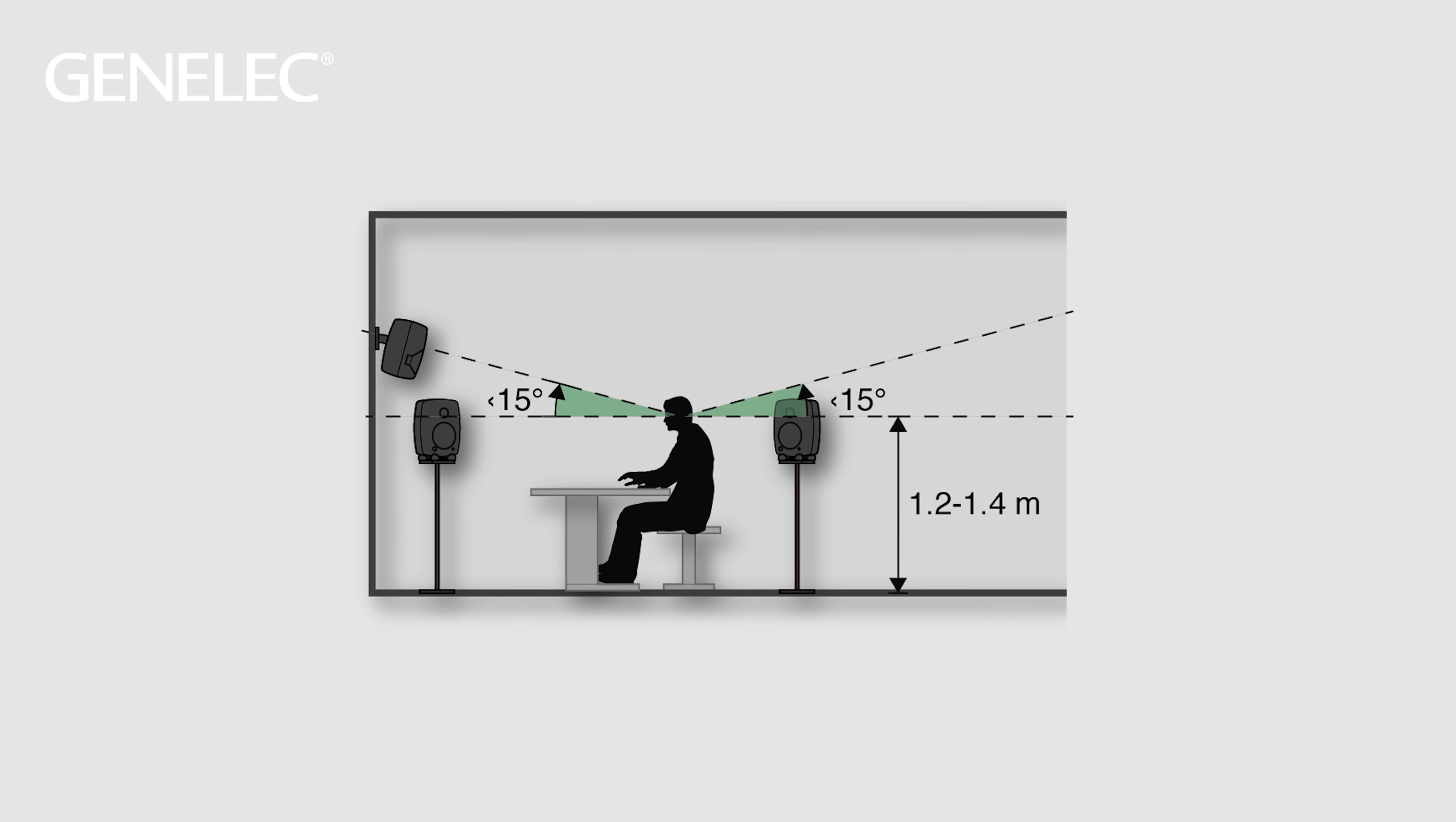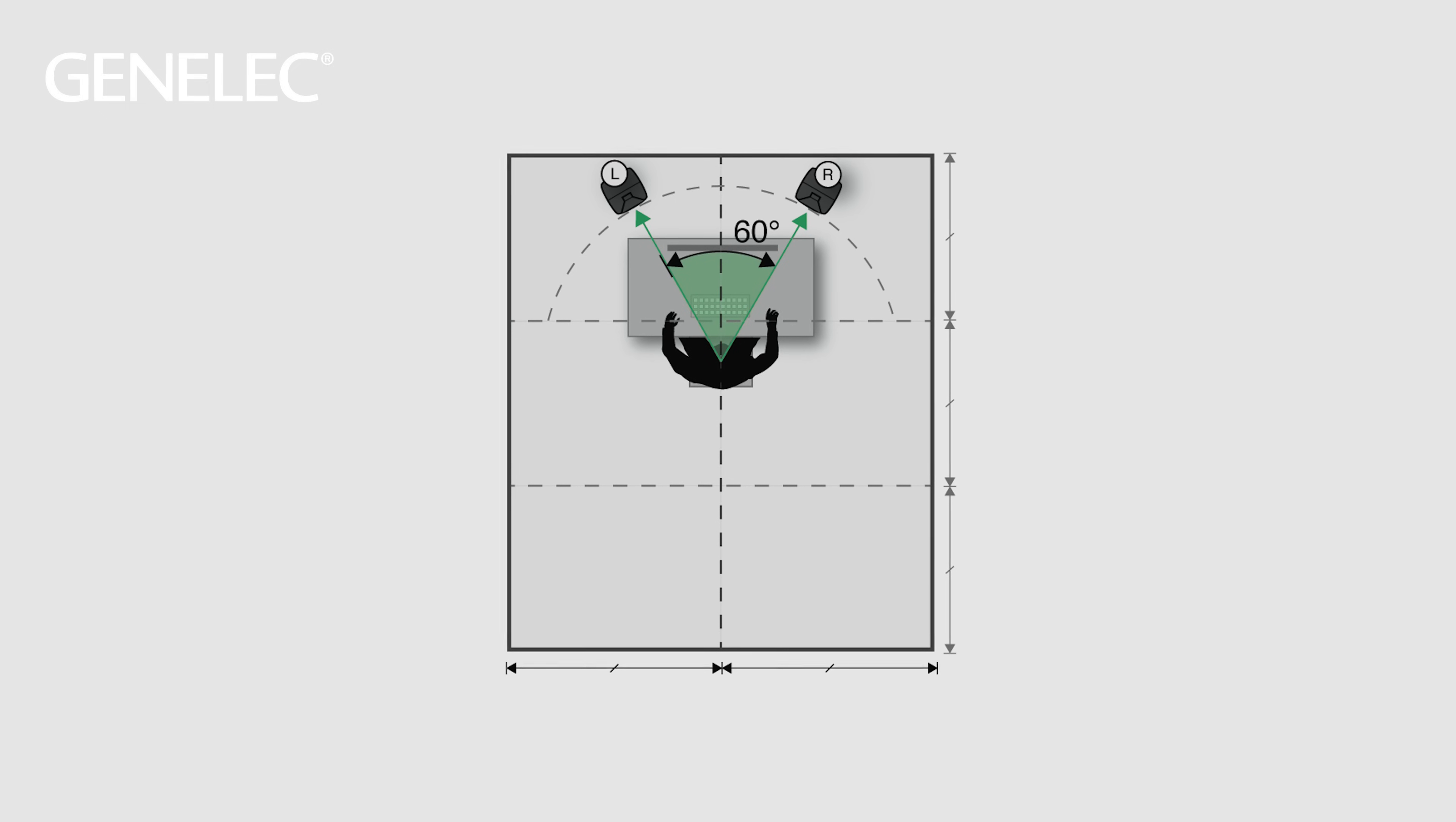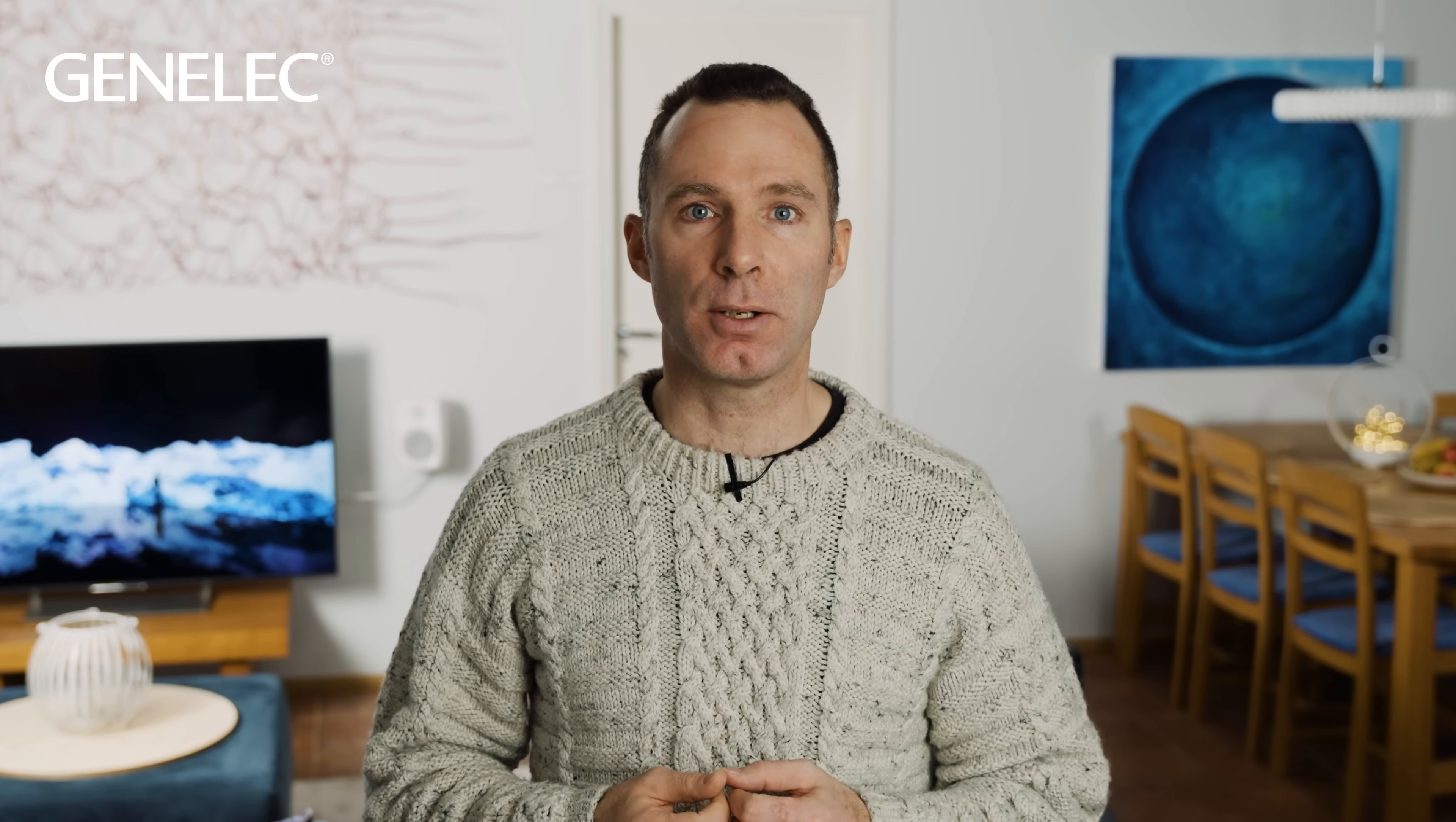For typical two-way systems, the recommended height of the monitor's acoustical axis is at ear level. And the distance between the left monitor and the right monitor should equal the distance between each monitor and your head. This forms an equilateral triangle. We'll place the measuring microphone at the listening spot and open up GLM. Just define your system layout and room measurements, and you're ready to go.